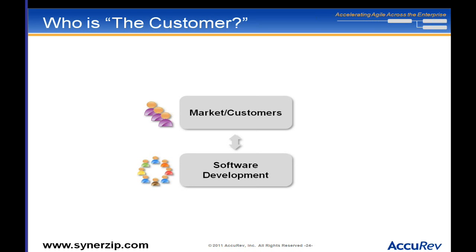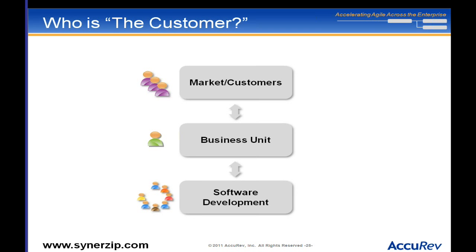The first question is: who is your customer? If you have direct interactions with the end user of your software and you can see the direct connection between their use and the software, then you have a direct customer. On the other hand, you might think of your customer as an internal business unit, which then has a market and customers it serves. If you're focused on the business unit as the customer, you're only focusing on them.